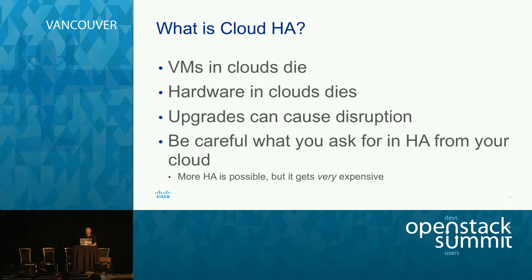Hardware in clouds dies — and that hardware may not just be your compute nodes, it can also be your control nodes. You need to deal with that by running many copies of the processes that comprise OpenStack's control layer: a redundant database, redundant RabbitMQ, many copies of the Nova API, and so on, to make sure that if one piece of hardware dies, something else takes over without forgetting what's been happening.